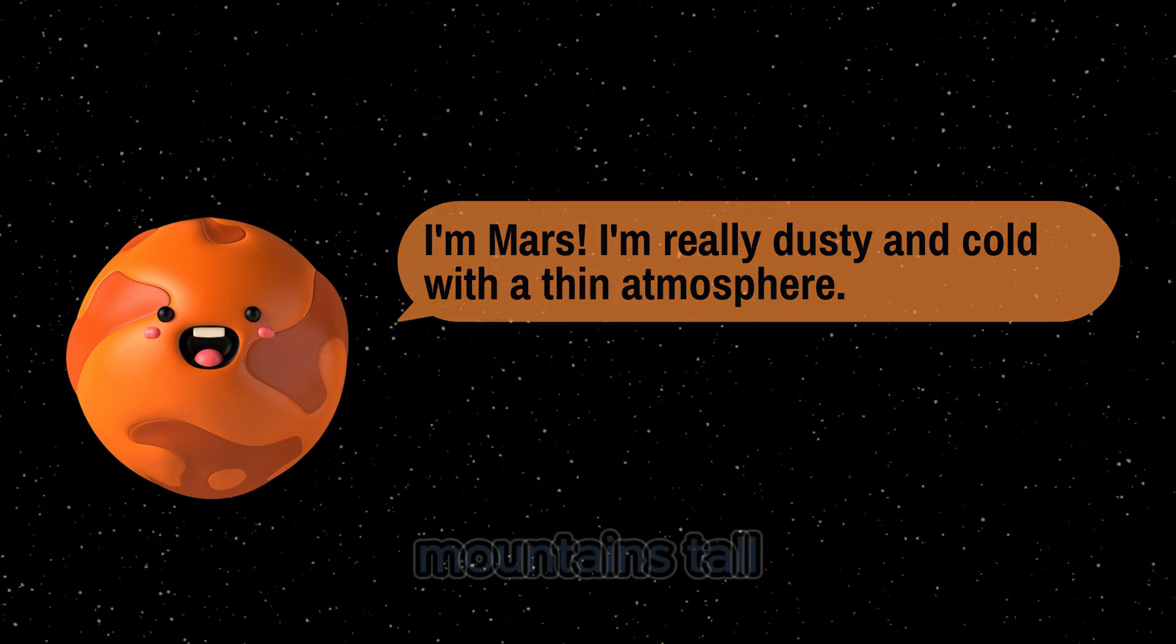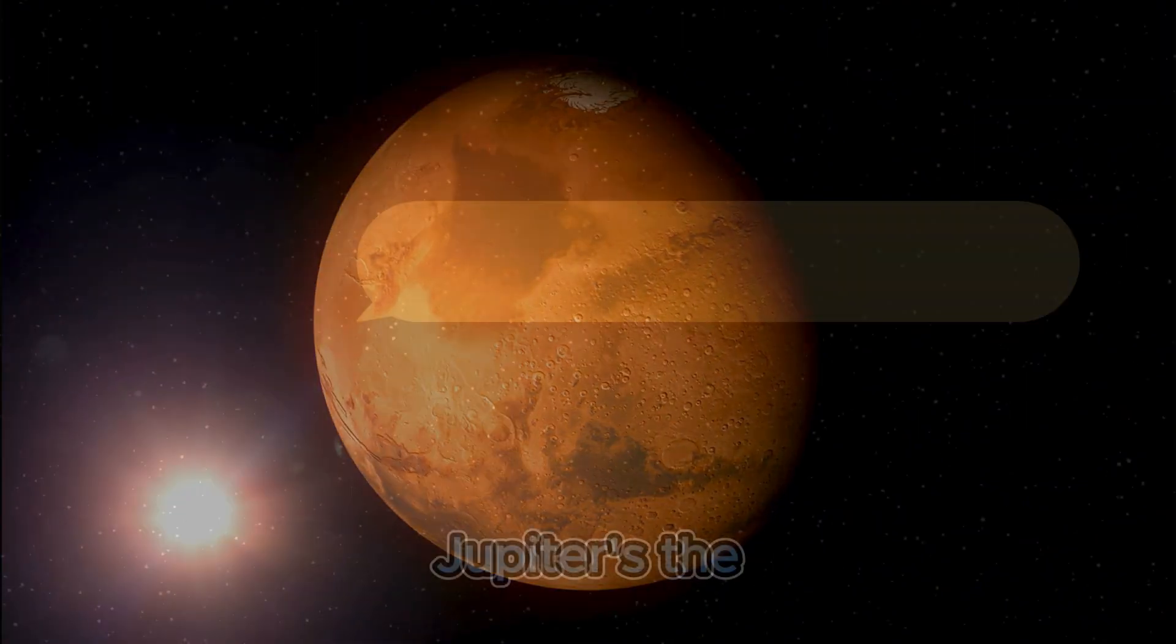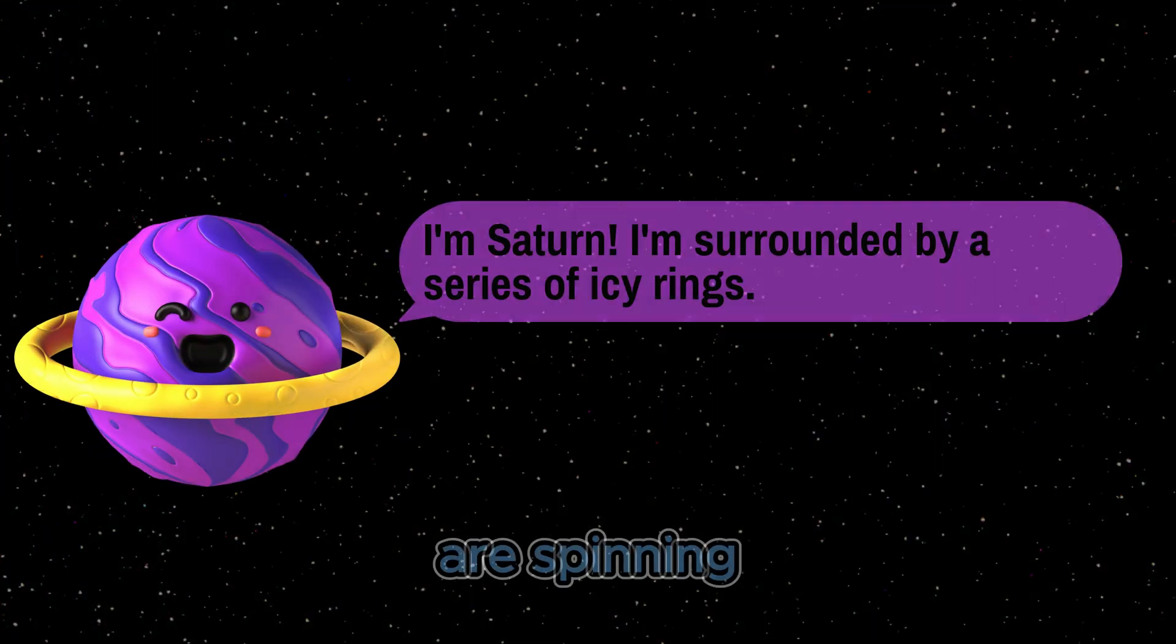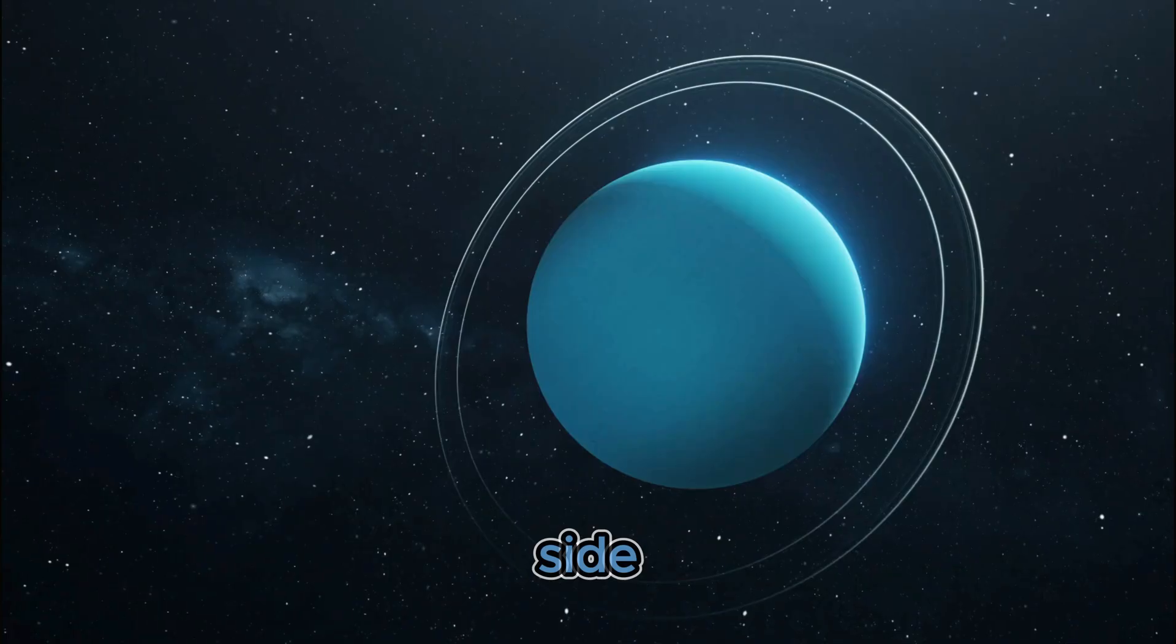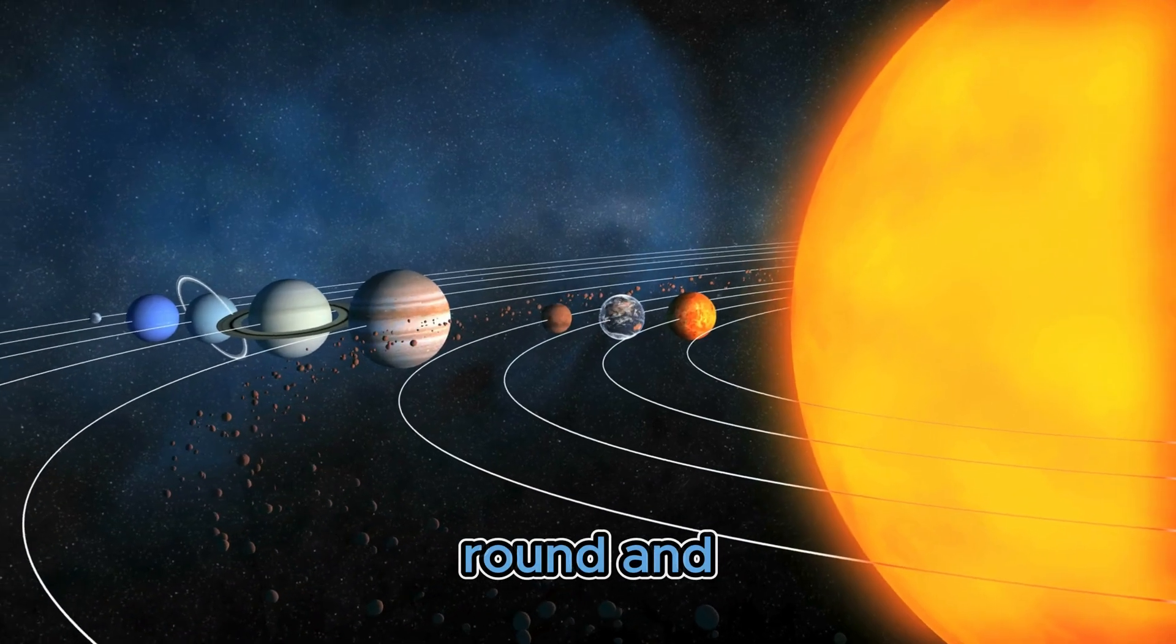Mars is red with mountains tall. Jupiter's the biggest of them all. Saturn's rings are spinning wide, Uranus tilts on its side.